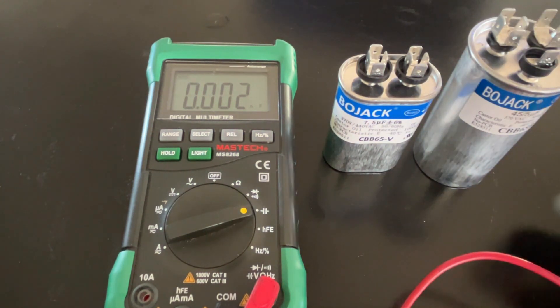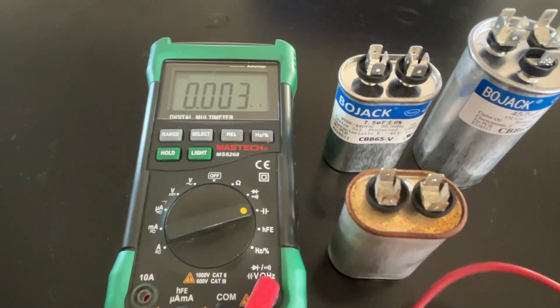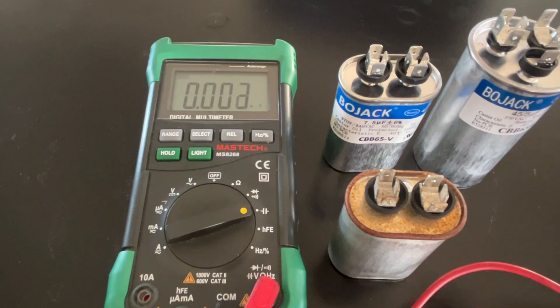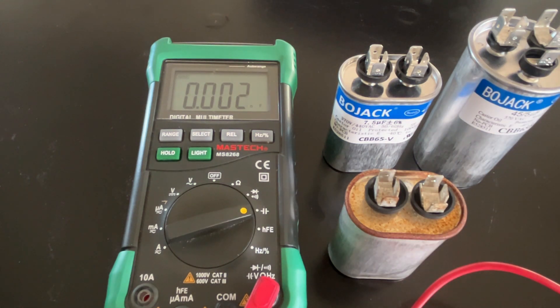So that's how you measure capacitors. Make sure they're discharged before you check them. Make sure when you take it out of the machinery that it's operating, you don't touch the contacts—you'll get a nasty shock. Set your multimeter to the capacitance setting. On these dual run capacitors, you're going to have two different readings—one for the fan and one for the compressor—and you measure both of those against the common. That's all there is to testing capacitors. I hope this video has been helpful to you. I really appreciate you watching. Have a great day.